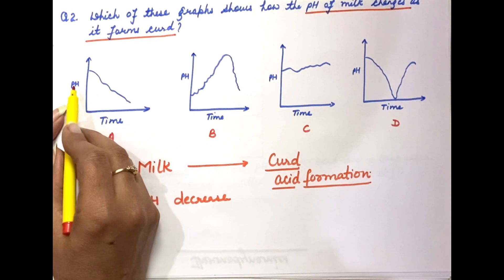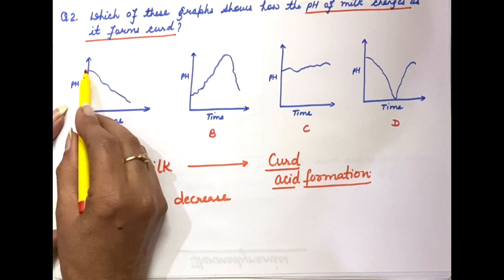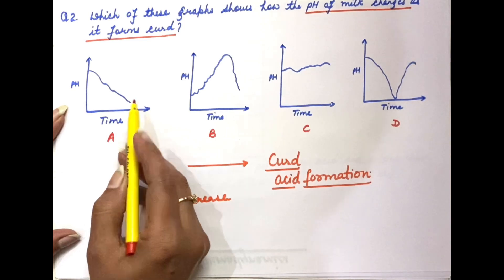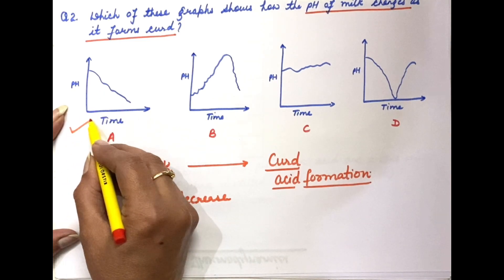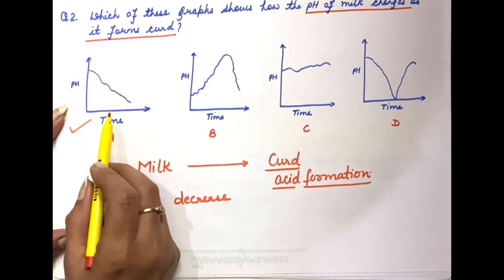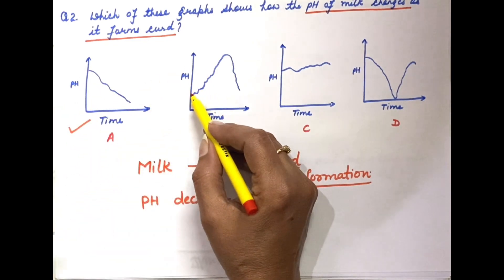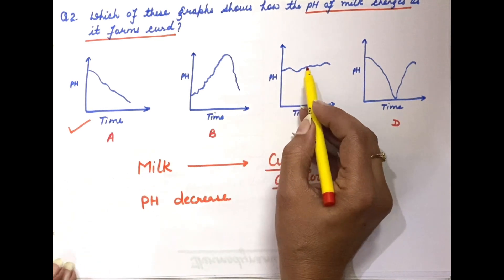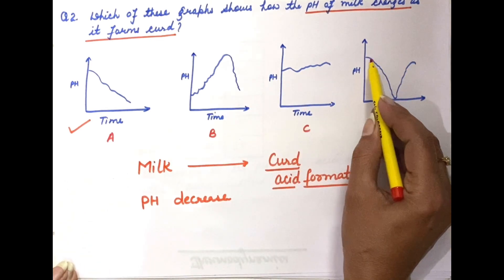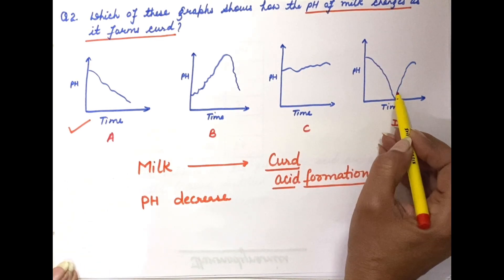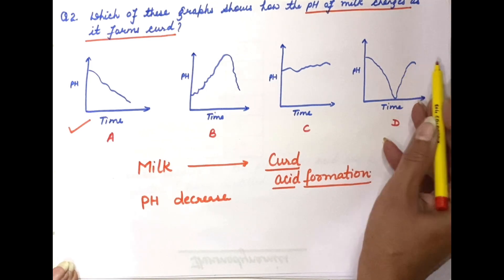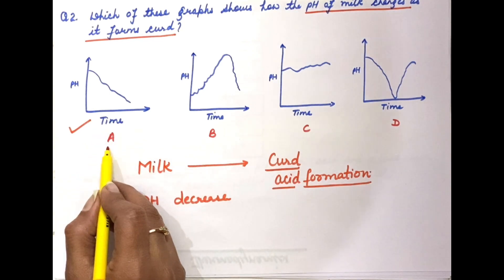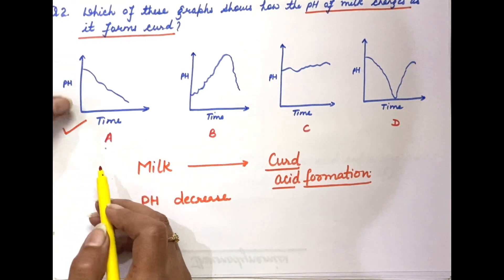तो जैसे-जैसे milk change होगा curd में, तो pH decrease होनी चाहिए. The correct graph shows pH versus time, where pH is decreasing with time. One graph shows pH increase then decrease, another shows pH remaining almost the same, and another shows pH decrease then increase. So the correct graph is the first one — that is option A.